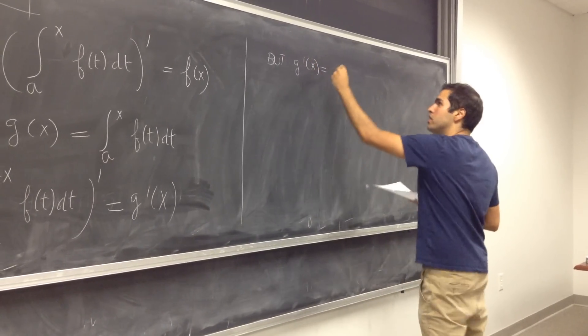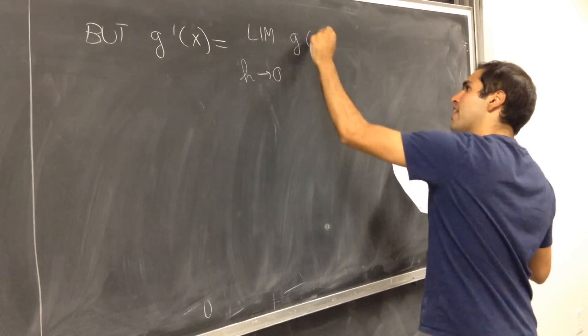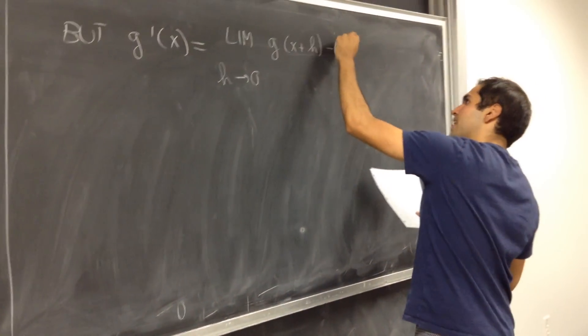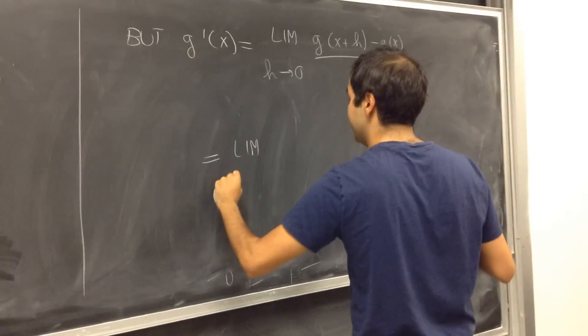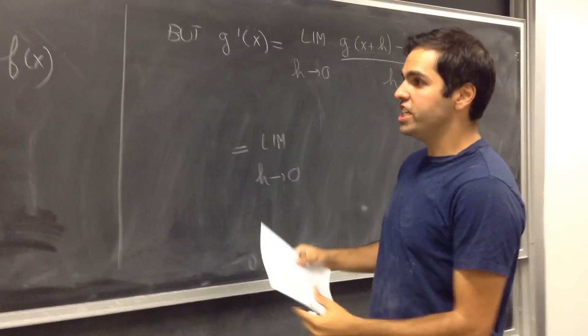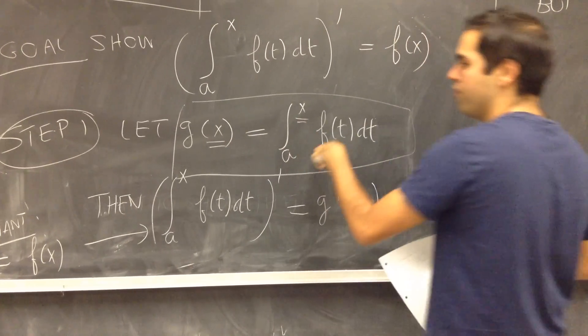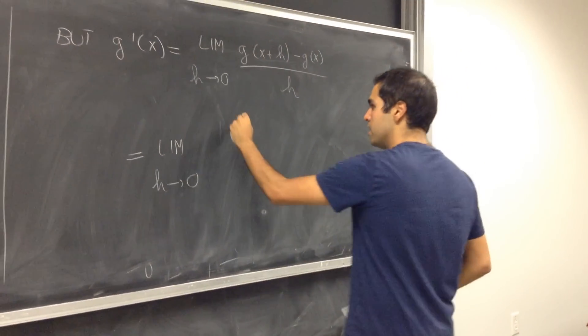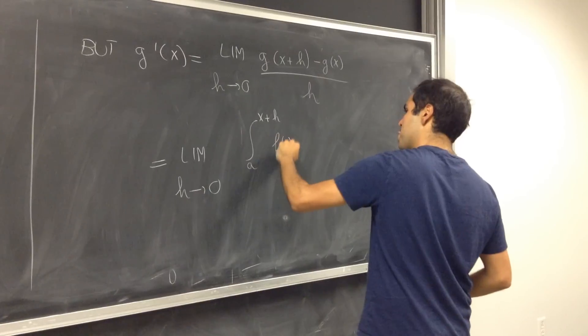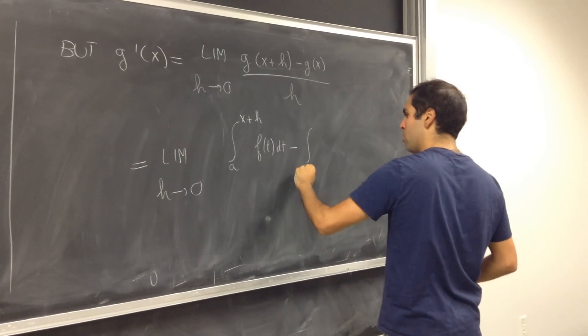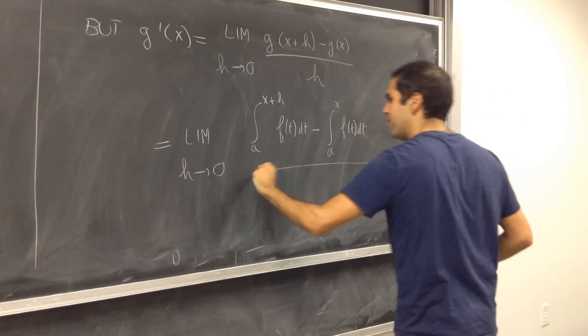But what is g prime of x? By definition of the derivative, limit as h goes to zero of g of x plus h minus g of x over h. And that becomes, by definition, what is g of blah? It's integral from a to blah of f of t dt.